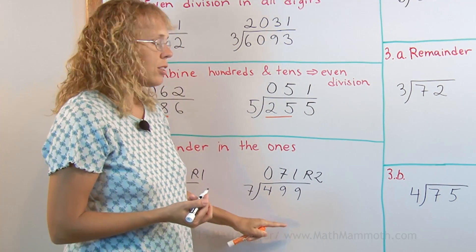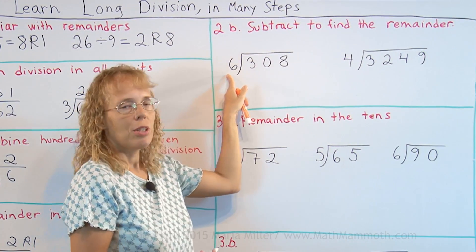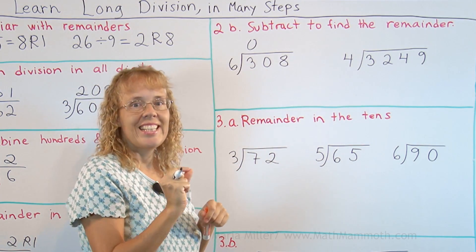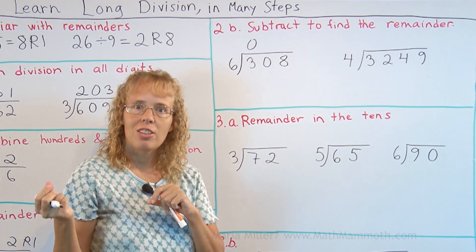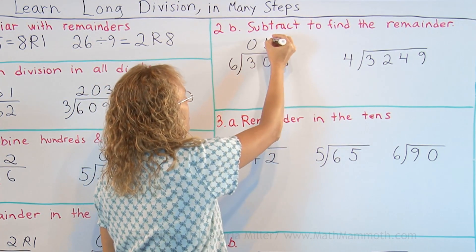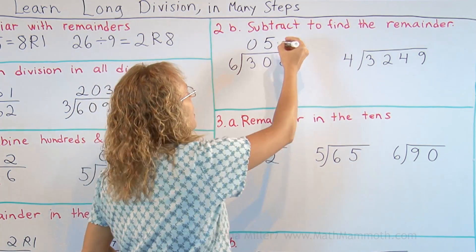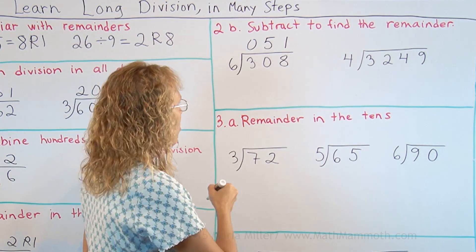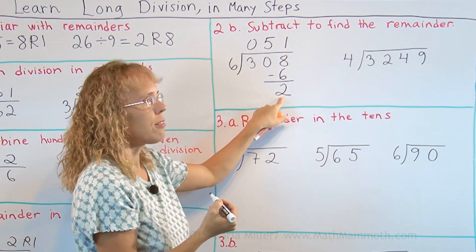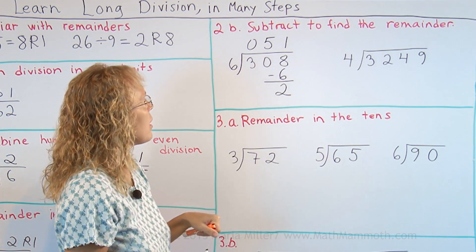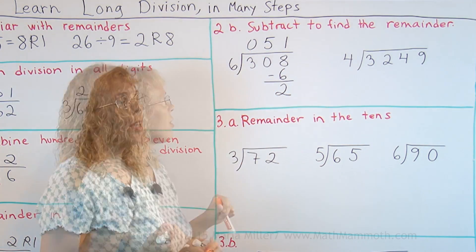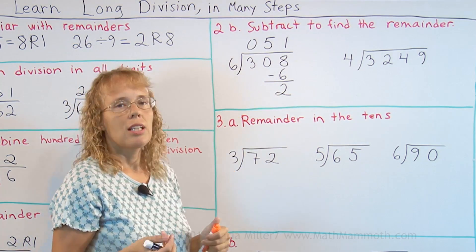In the next step, we learn to find the remainder by multiplying and subtracting. For example, 6 doesn't go into 3 at all, so we combine the 300 and 0 tens to make 30 tens — just like exchanging 300 dollar bills for 10 dollar bills, giving 30 ten dollar bills. So 6 goes into 30 five times, and then 6 goes into 8 once. Instead of writing 'remainder 2' at the end, we multiply and subtract to find the remainder: 1 times 6 is 6, write 6 there, subtract 8 minus 6 equals 2 — and that is the remainder. In this step, students practice finding the remainder only in the ones place, not in the tens or hundreds, so they can understand it better.